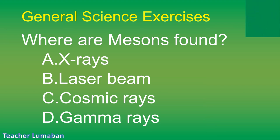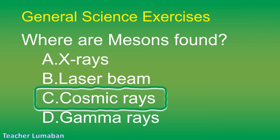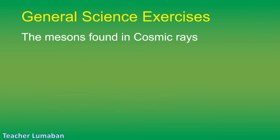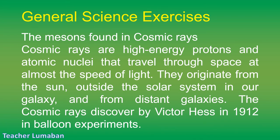The correct answer is Letter C: cosmic rays. Mesons are found in cosmic rays. Cosmic rays are high-energy protons and atomic nuclei that travel through space at almost the speed of light. They originate from the sun, outside the solar system in our galaxy, and from distant galaxies. Cosmic rays were discovered by Victor Hess in 1912 in balloon experiments.